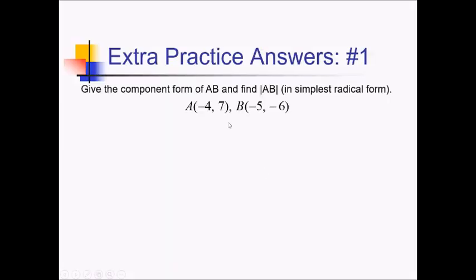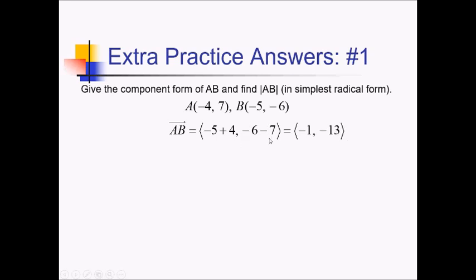On this problem, they're asking for the component form of the vector with these two points and also the magnitude. This will be easiest if we get the component form first. You're basically just figuring out directions to get from one point to another. So we're going to do second point minus first point, coordinate by coordinate. So we've got negative 5 minus negative 4, or plus 4, and then we have negative 6 minus 7. So that's going to give us the component form negative 1 comma negative 13.